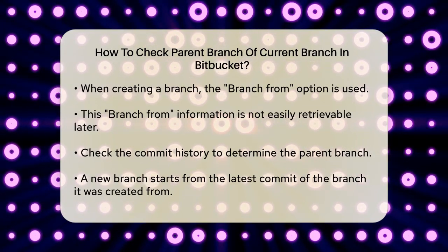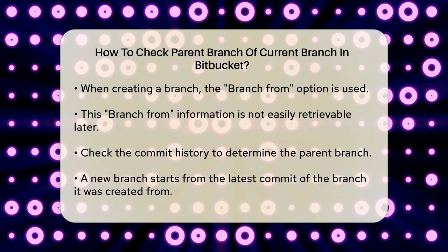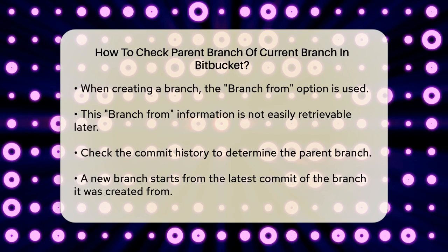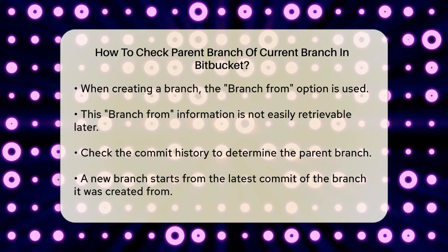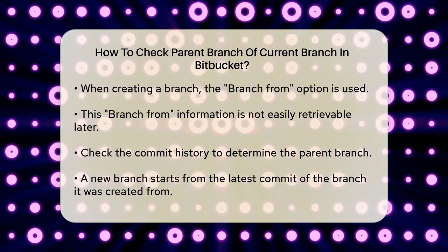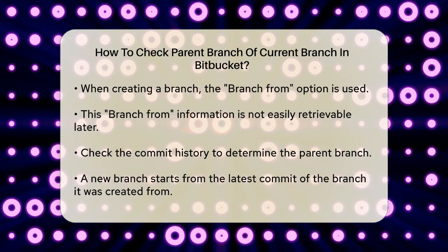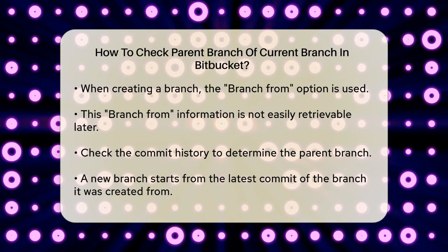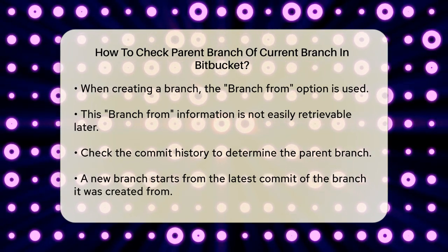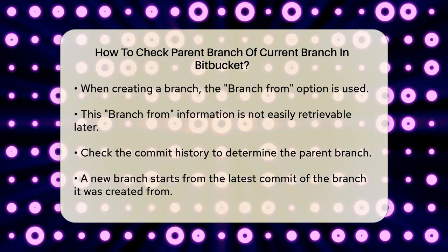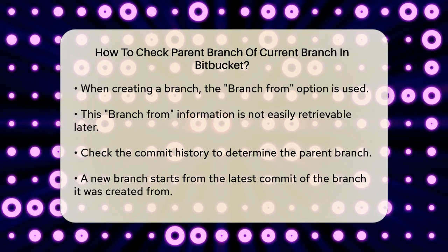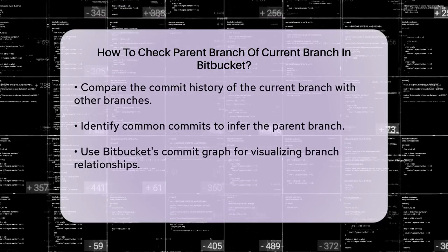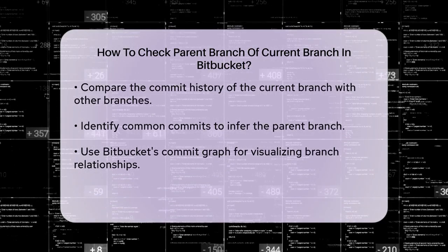To determine the parent branch, you can use a few indirect methods. One way is to look at the commit history. When you create a branch, it starts from the latest commit of the branch you branched from. You can check the commit history to see which commits are common to both branches. In Bitbucket, you can click on the branch you're interested in and then view its commit history. By comparing the commit history of your current branch with other branches, you can identify the common commits and infer which branch your current branch was likely branched from.